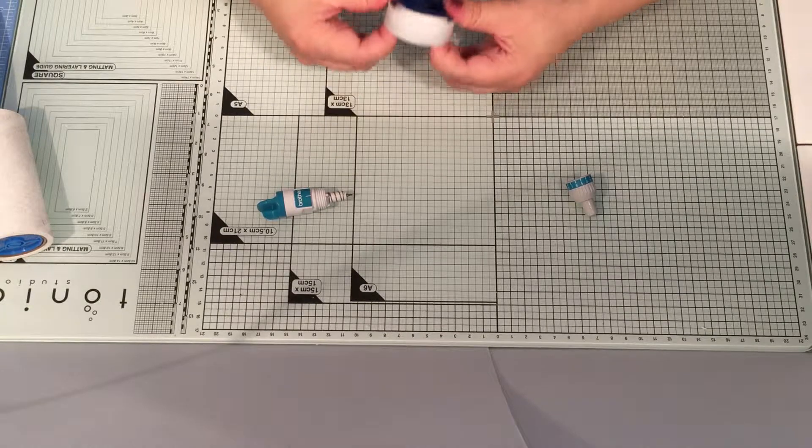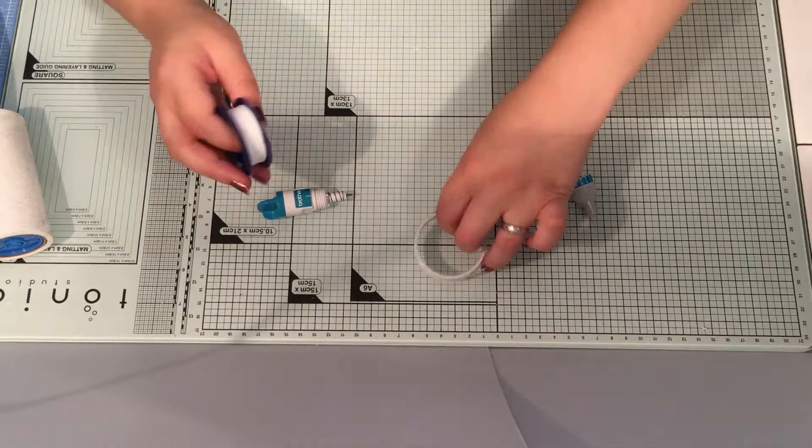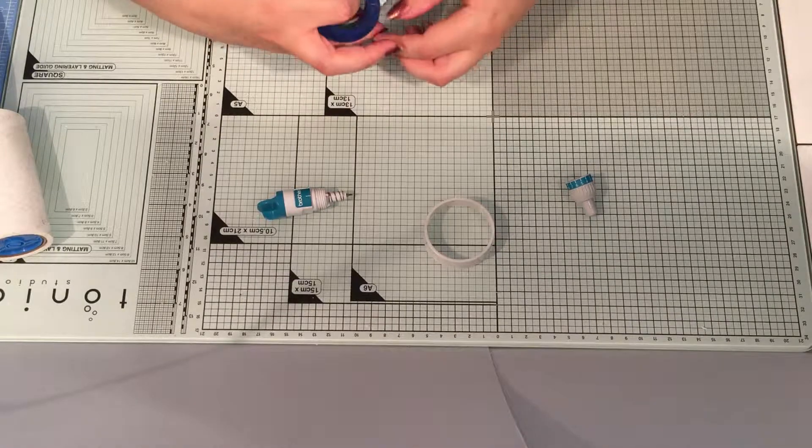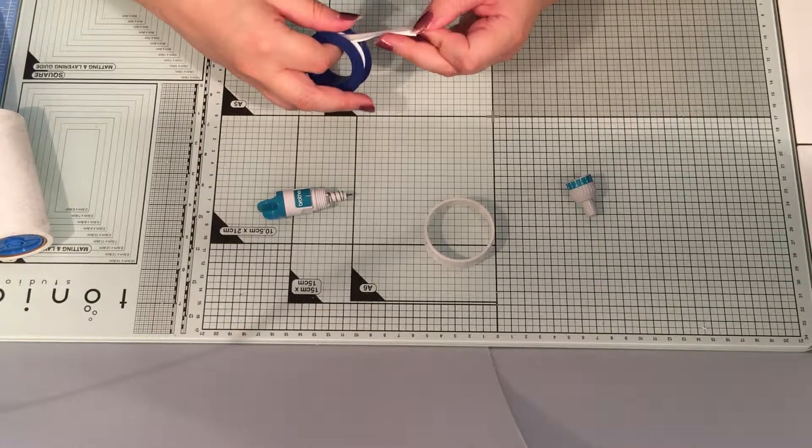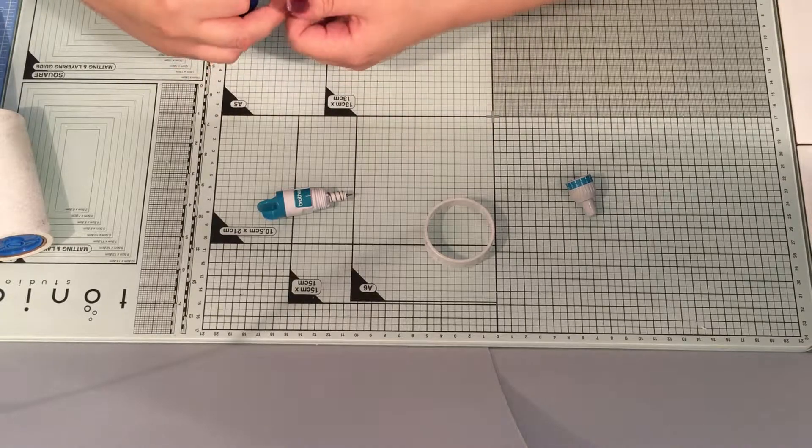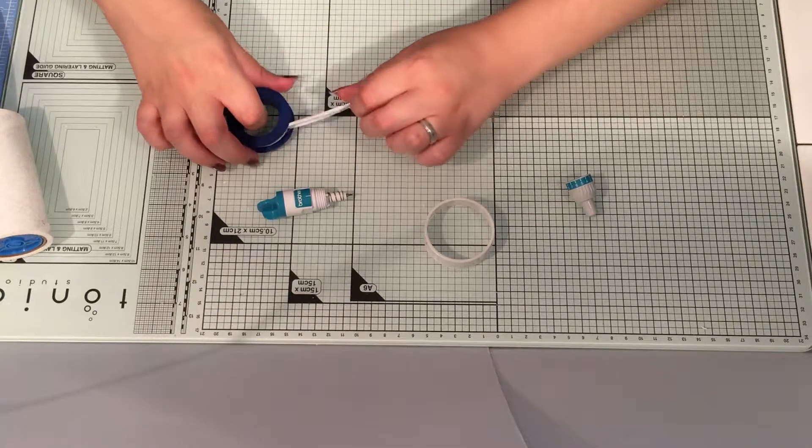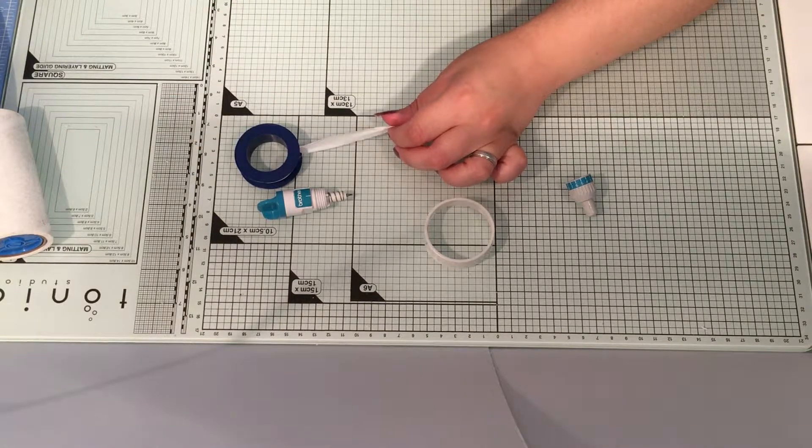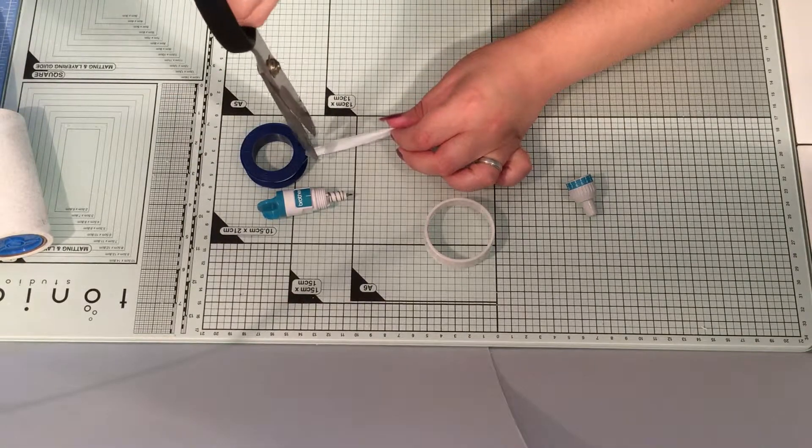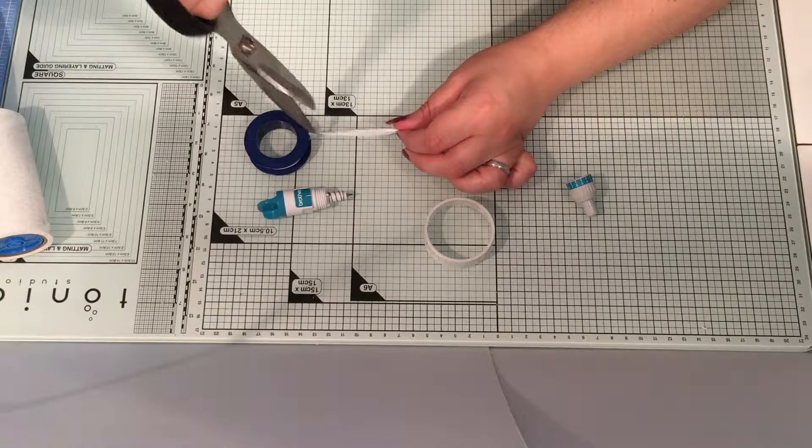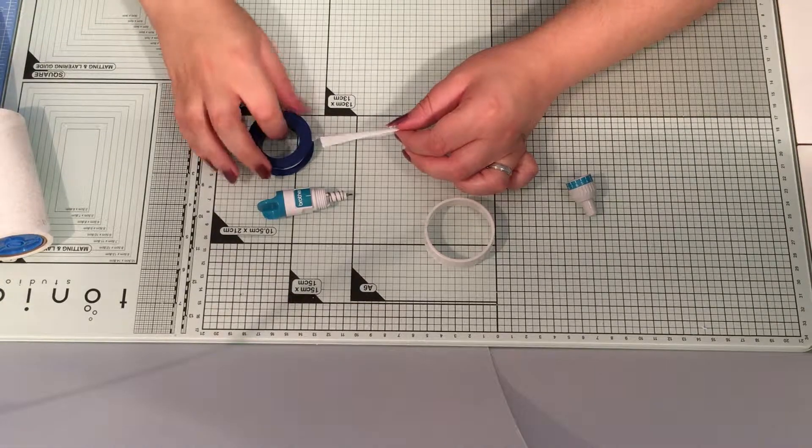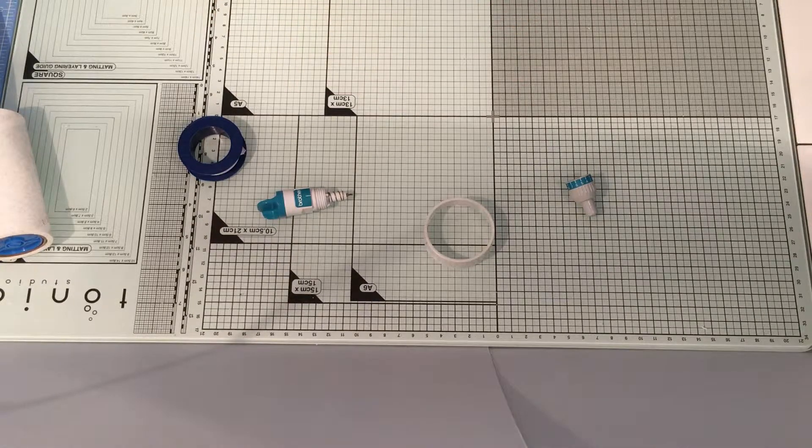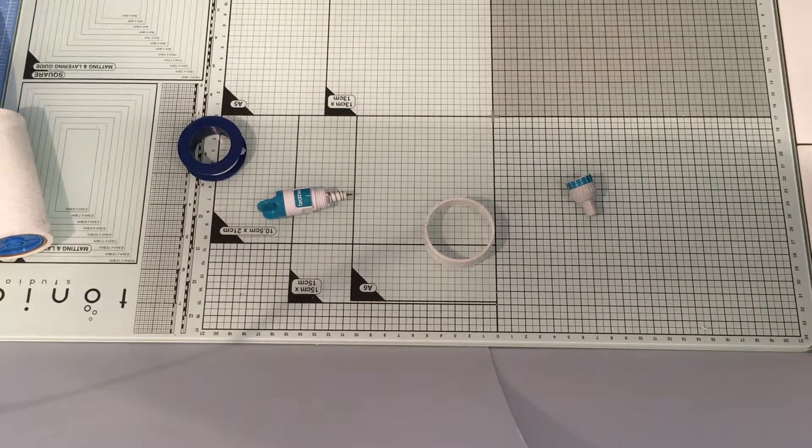You're then going to get your PTFE tape, which is plumbing tape by any other name. This is a sort of thin stretchy plastic tape that you use if you had a leak on your taps. So you can see it's quite fragile and stretchy and a little bit annoying to work with. You're going to cut yourself a good two and a half to three inches and it's going to fight back because these things do.